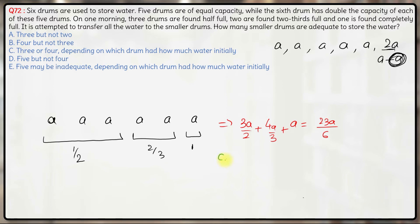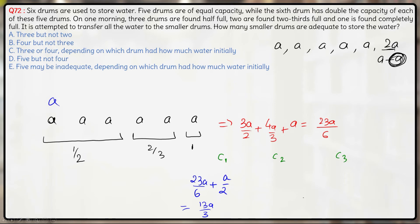Now we consider 3 cases. Case 1: the bigger drum is half full. In this case, the total capacity full will be 23A/6 plus an extra A/2 from the bigger drum being half full. This comes out to be 26A/6, which is 13A/3.